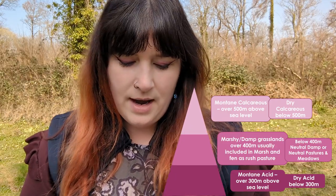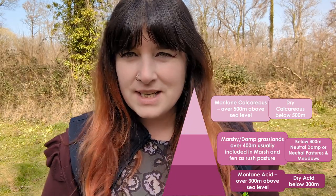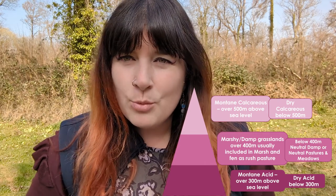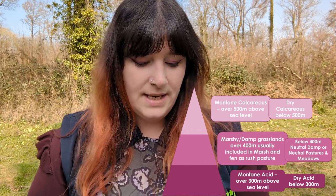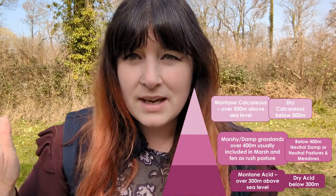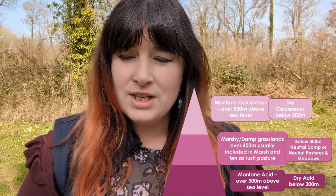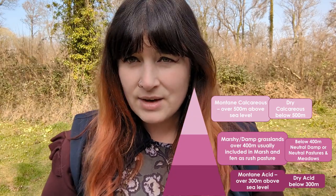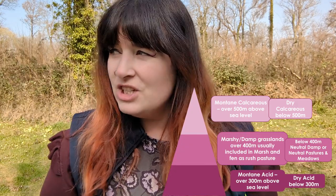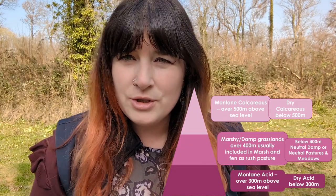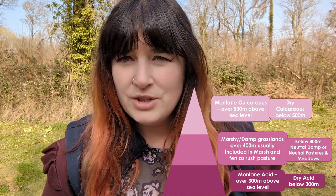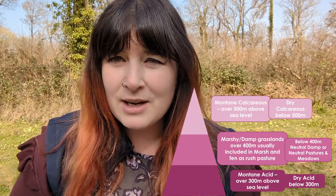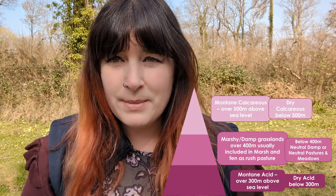For example, in our guide it says that if you are below 300 metres above sea level and it's showing acidic characteristics, that would be lowland dry acidic grassland. If it's above 300 metres, you're probably looking at montane acid grassland. For calcareous grassland, 500 metres is the threshold — below that is dry calcareous within lowland grassland, above 500 metres is montane calcareous grassland. For damp grassland and meadows, the threshold is around 400 metres — below that is neutral pastures and meadows, above 400 metres you might be looking at a flush or montane habitat.